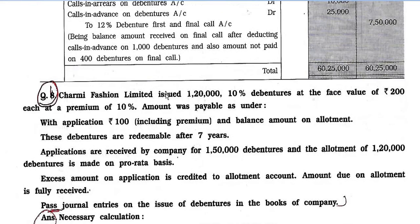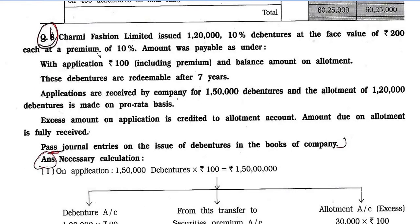Now, Question No. 8. Charmy Fashion Limited issued 1,20,000 10% debentures at face value of Rs. 200 each at a premium of 10%. Amount was payable as: with application Rs. 100 including premium, and balance amount on allotment. These debentures are redeemable after 7 years. Applications were received for 1,50,000 debentures and allotment of 1,20,000 debentures is made on pro-rata basis. Excess amount on application is credited to allotment account. Amount due on allotment is fully received. Pass journal entries.